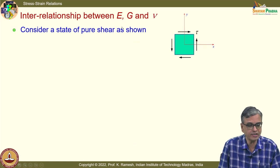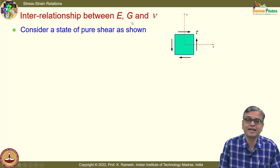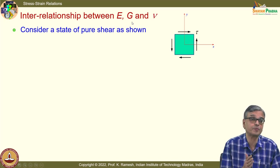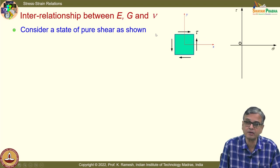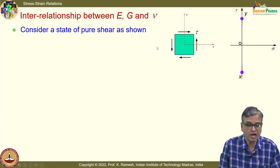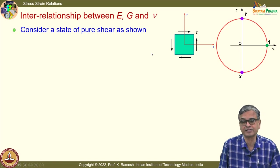We have also looked at how many elastic constants are required to characterize an isotropic material. We have seen Young's modulus E, shear modulus G, Poisson's ratio ν, and bulk modulus K — four of them discussed. Out of these four, how many are required to characterize an isotropic material?